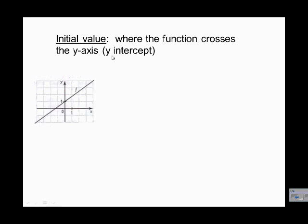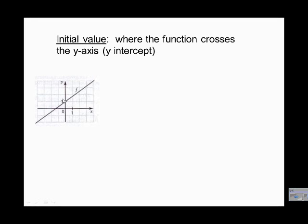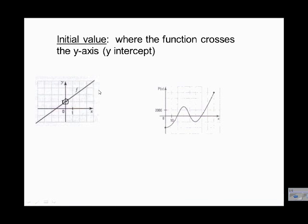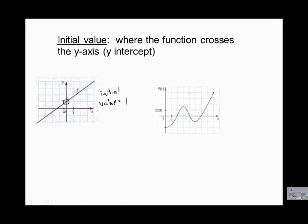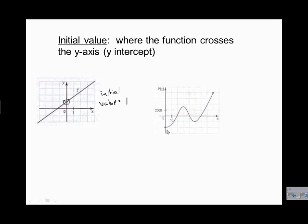The initial value is where the function crosses the y-axis — our y-intercept. So we look at our y-axis, find where the function crosses — right here — and we just need to write down the value of y. We don't need to worry about the x-coordinate because when it crosses the y-axis our x-coordinate is always zero. Our initial value is one.